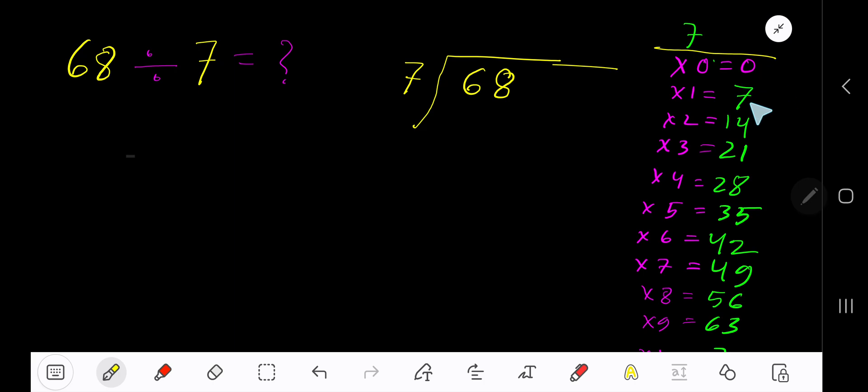To find out the multiplication table of 7, just add 7 with the previous step: 0 plus 7 is 7, 7 plus 7 is 14, 14 plus 7 is 21, 21 plus 7 is 28, 28 plus 7 is 35. This process will continue. 7 goes into 6 how many times? Actually 0 times. 6 is less than 7.